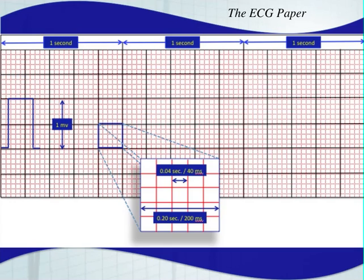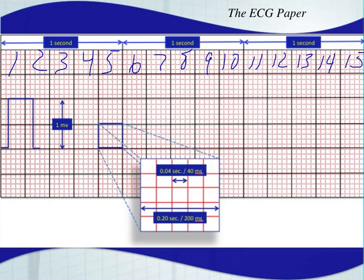If you count the large boxes from left to right — one, two, three, four, five, six, seven, eight, nine, ten, eleven, twelve, thirteen, fourteen, and fifteen — this is a three-second piece of paper. And again, this is going to become very important. When you're interpreting EKG rhythms, a six-second strip is often used to identify the rhythm.